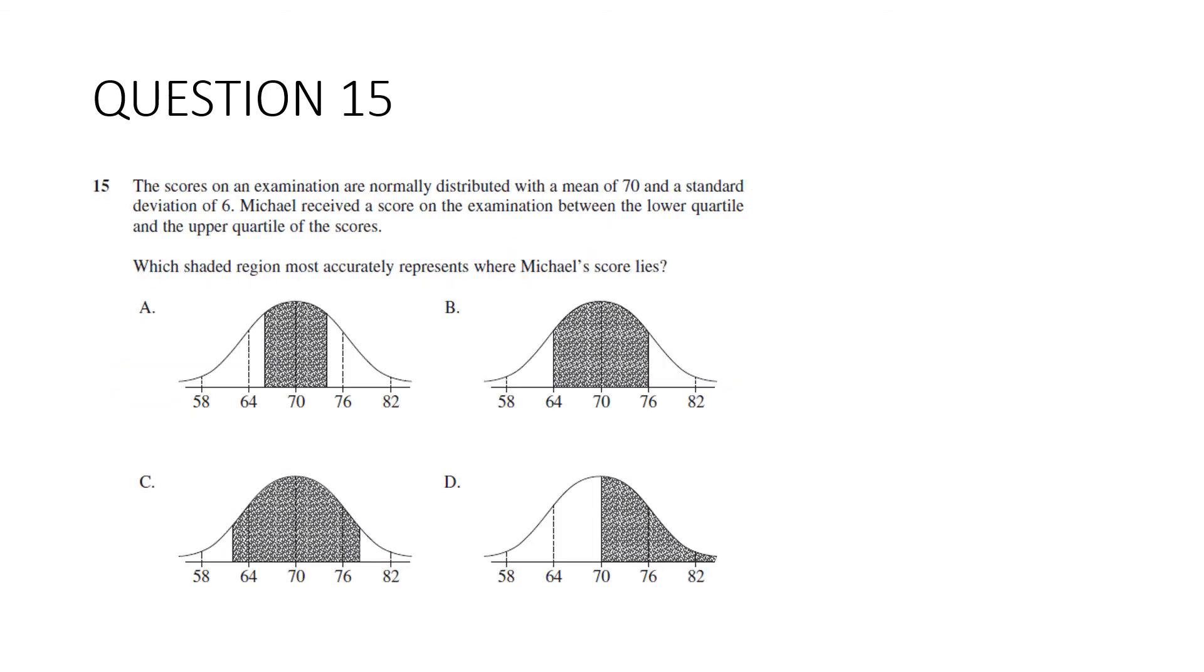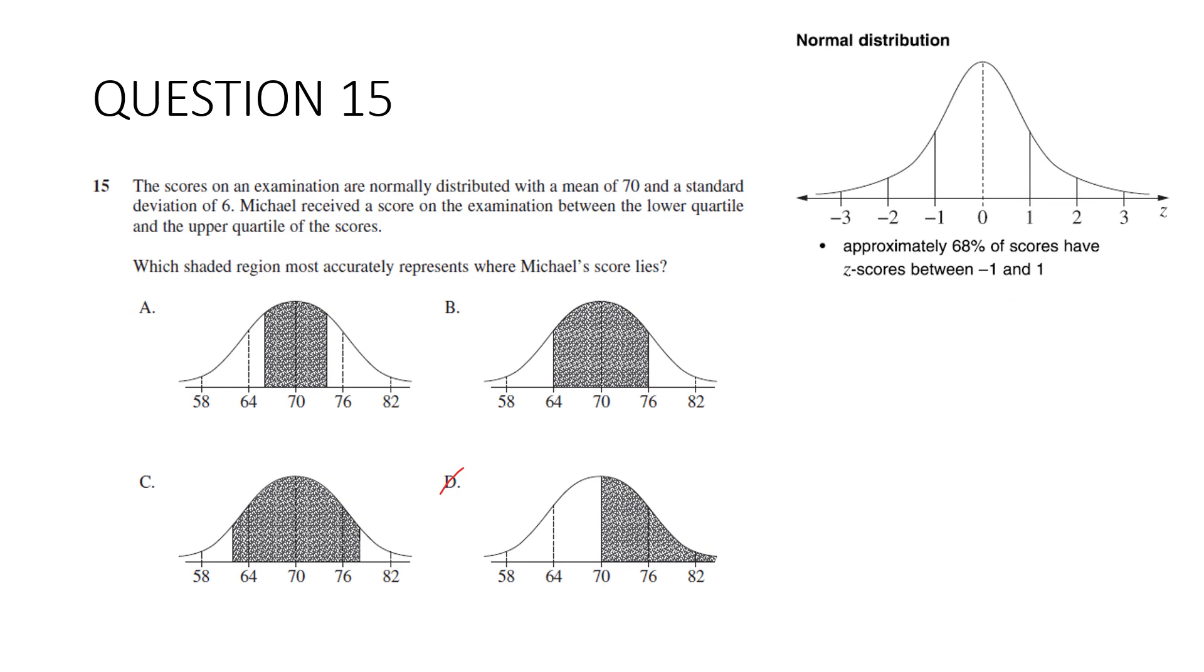Question 15. The scores on an examination are normally distributed with a mean of 70 and a standard deviation of 6. Michael received a score on the exam between the lower quartile and the upper quartile of the scores, which shaded region most accurately represents where Michael's score lies. This is a bit of a nasty question to finish off with because it's mixing up upper and lower quartile standard deviation. They don't normally go together. Let's see if we can knock one of these out. So his score lies between the upper and lower quartile. It can't be D because this is above the mean. So we're one down at least here, here and here. They're very similar. We need some more information on the formula sheet. We have this. Approximately 68% of scores have Z scores between negative one and one or between one standard deviation of the mean. So 68% is going to lie between 64 and 76. Have a look how I got that. I took 6 from the 70, gave me 64. And I added 6 to the 70, gave me 76. So that's this one here. So this is 68%. So it's not this one.